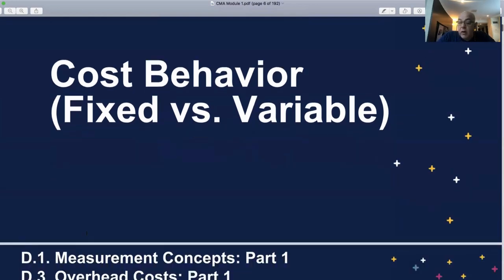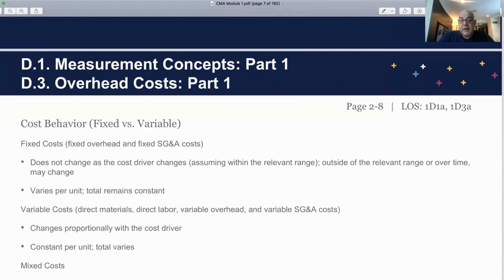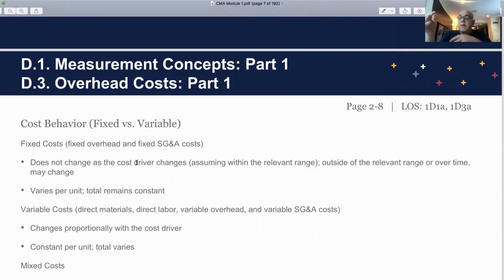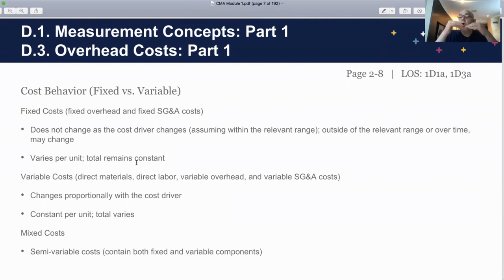To understand cost behavior, we distinguish between three types. Fixed cost does not change as the cost driver changes — whether you sell 100 sandwiches a day, 10, or 500, you still pay the $10,000 rent and insurance. Variable cost changes with production: if you're selling 10 sandwiches you might need 1 kg of cheese; if you sell 100 sandwiches, you need 10 kg. Variable cost goes up or down with your production. The key assumption is that variable cost is fixed per unit — for example, $3 material per sandwich whether you produce 10 or 1,000.